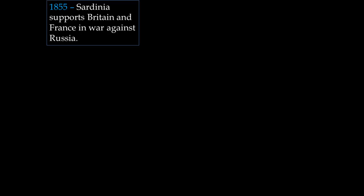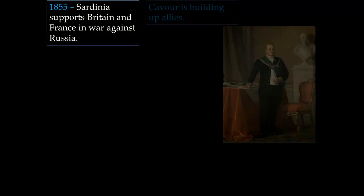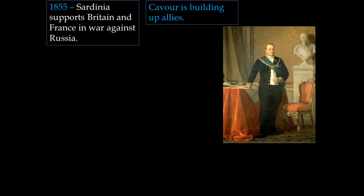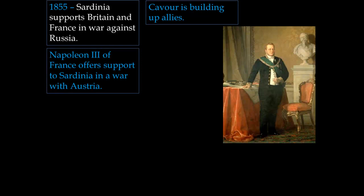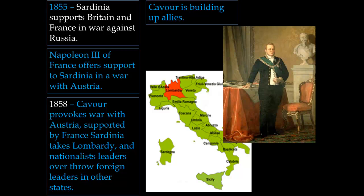In 1855, Cavour offers support to Britain and France in the Crimean War against Russia, building up allies, knowing it will be hard to get rid of Austria on their own. Napoleon III of France offers support to Sardinia in the event of a war with Austria. So Cavour incites a war, knowing he'll have support. In 1858, he provokes a war with Austria, and supported by France, Sardinia is able to take Lombardy. Nationalist leaders begin overthrowing other foreign leaders in other Italian states — it's the beginning of a revolution.